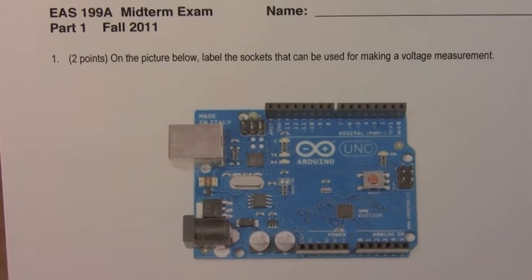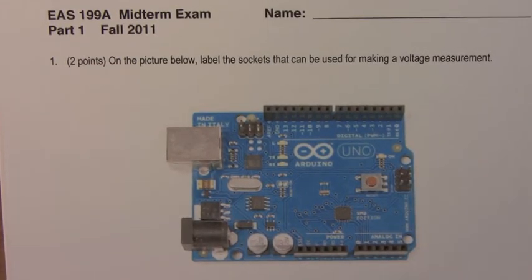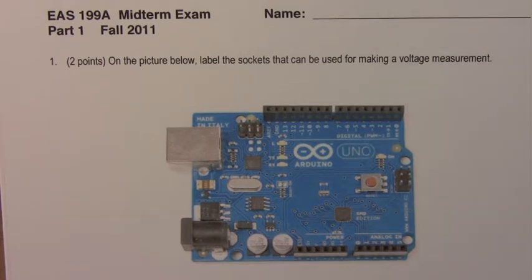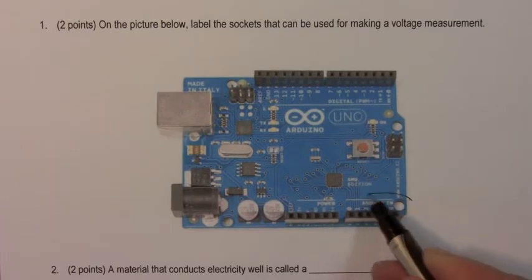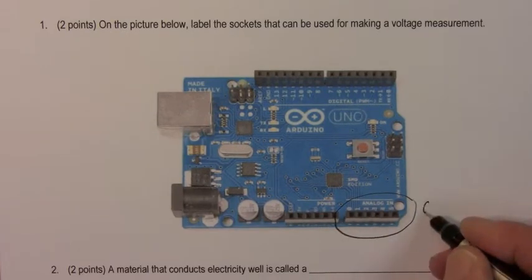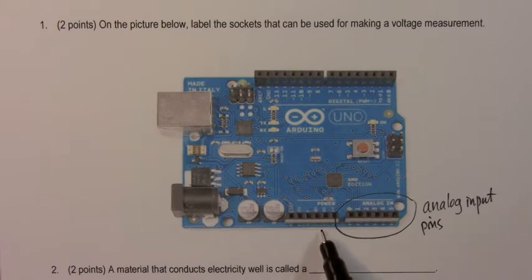First question. On the picture below, label the sockets that can be used for making voltage measurements. These are the analog input sockets down here in this region of the Arduino. So we'd circle these and we'd label these as analog input pins and you would possibly need a ground pin for reference.